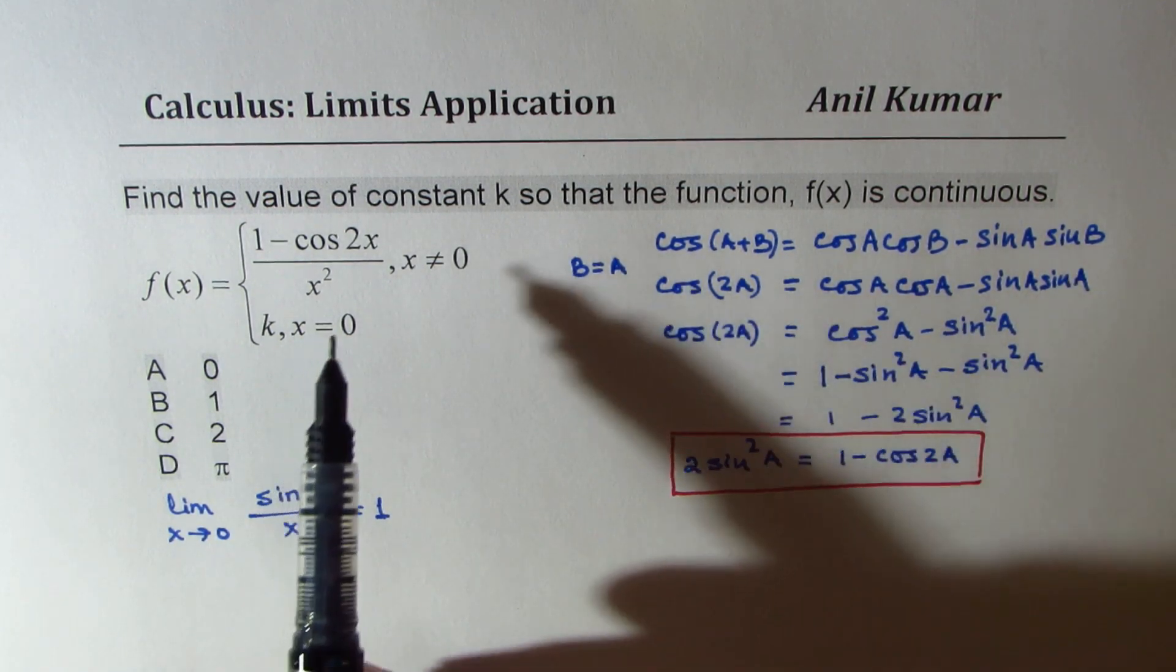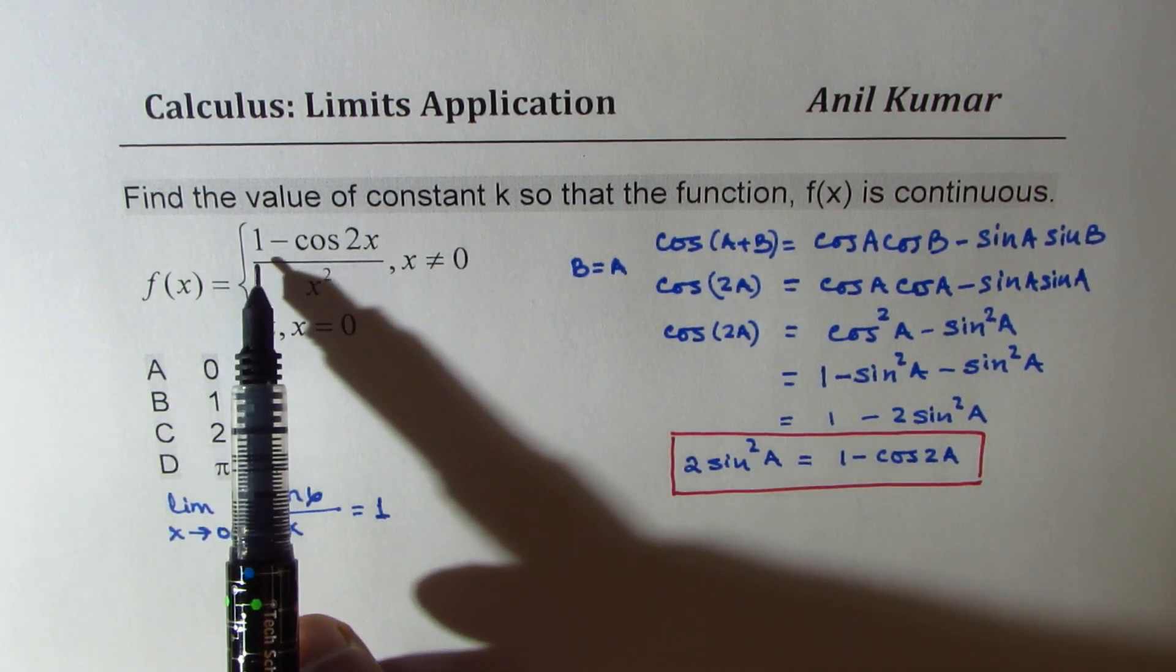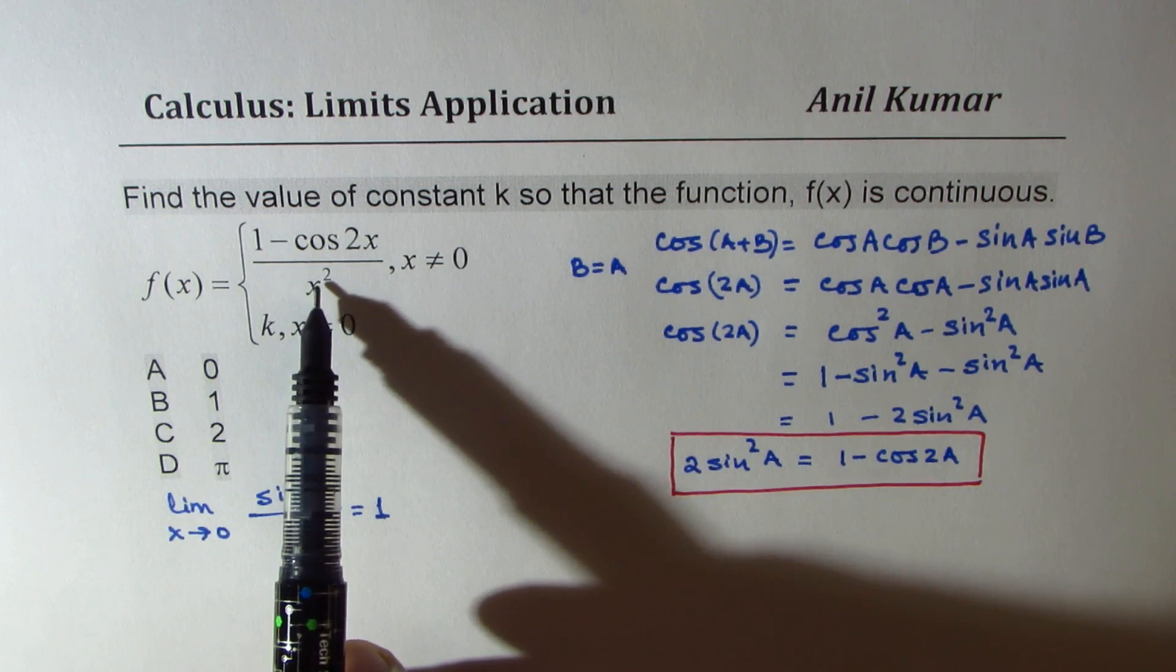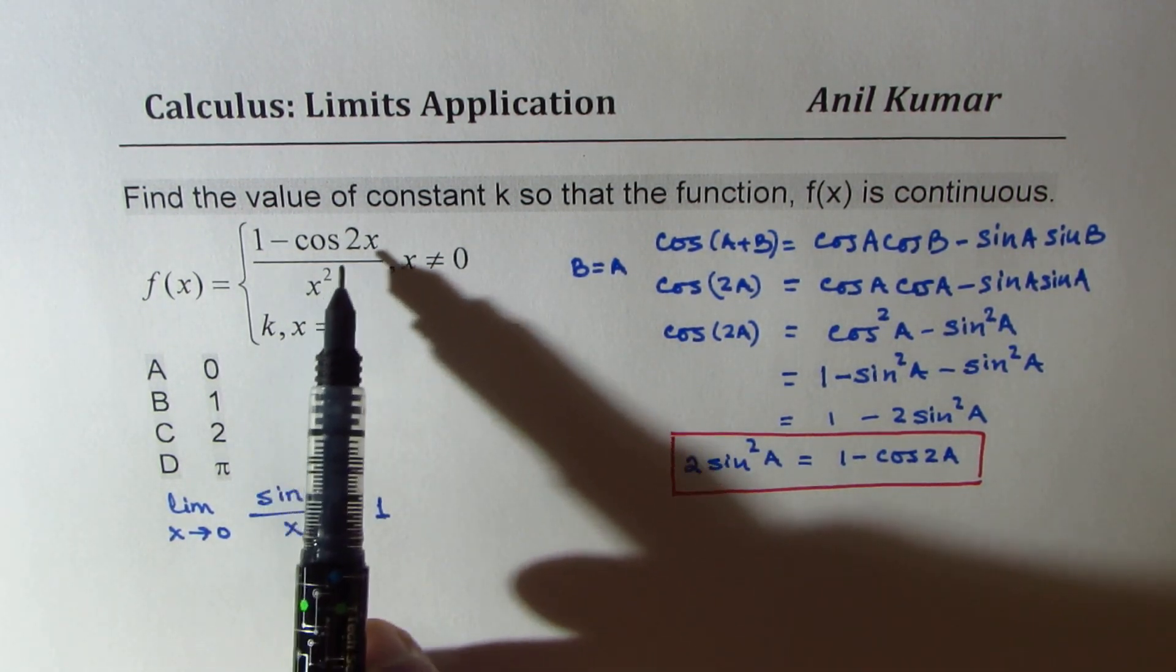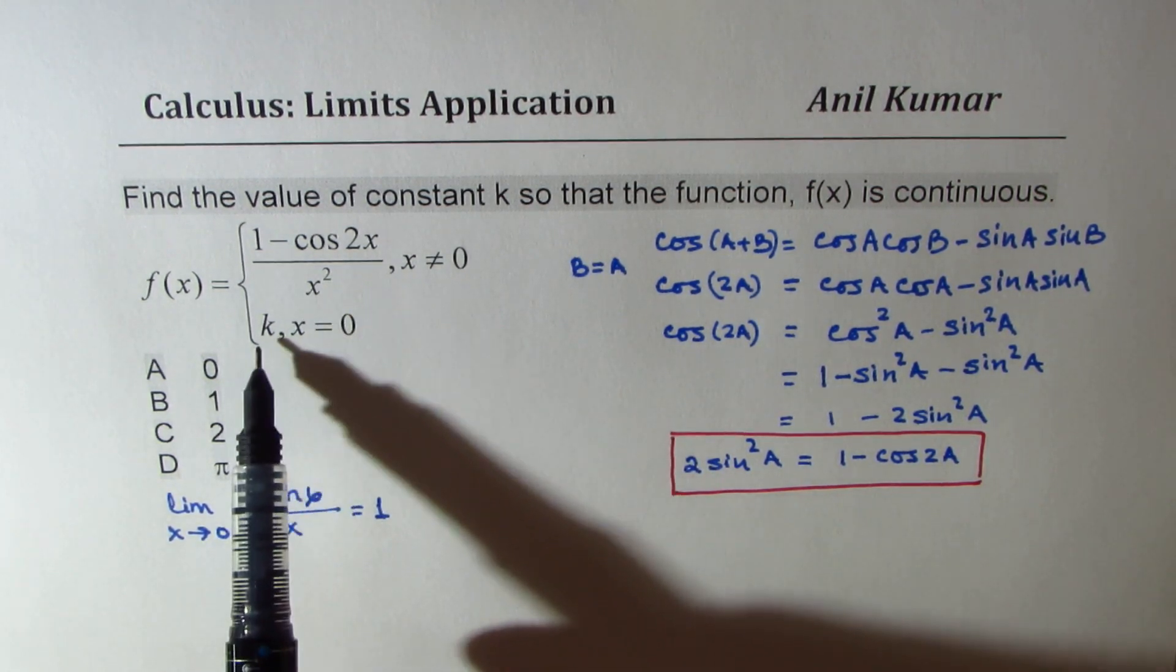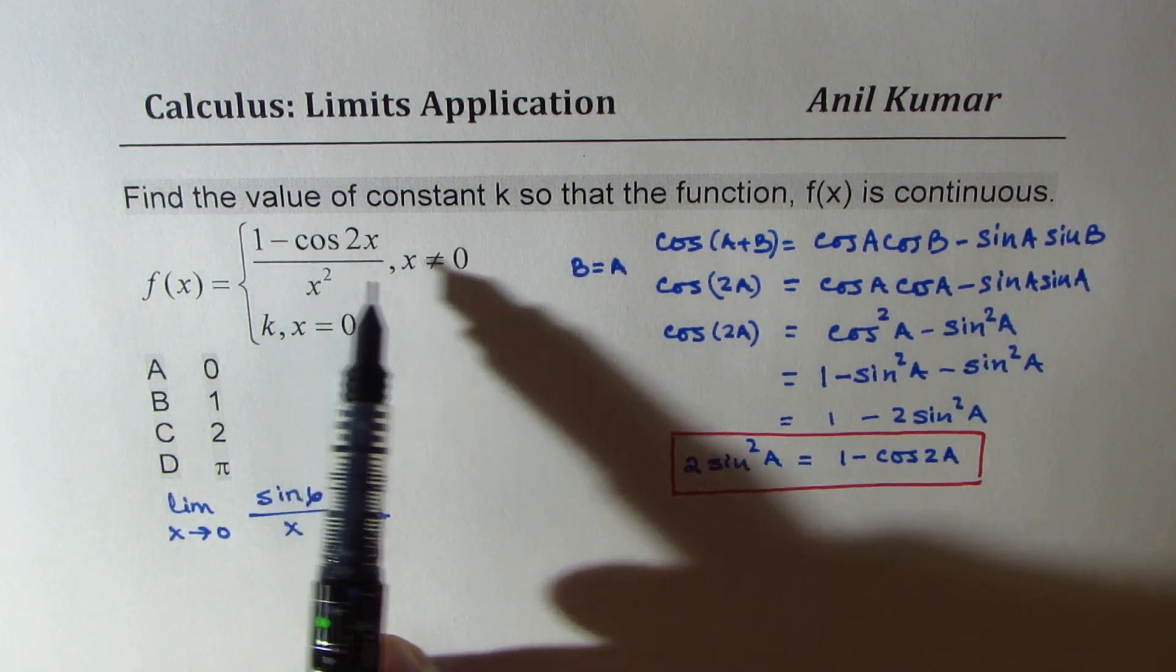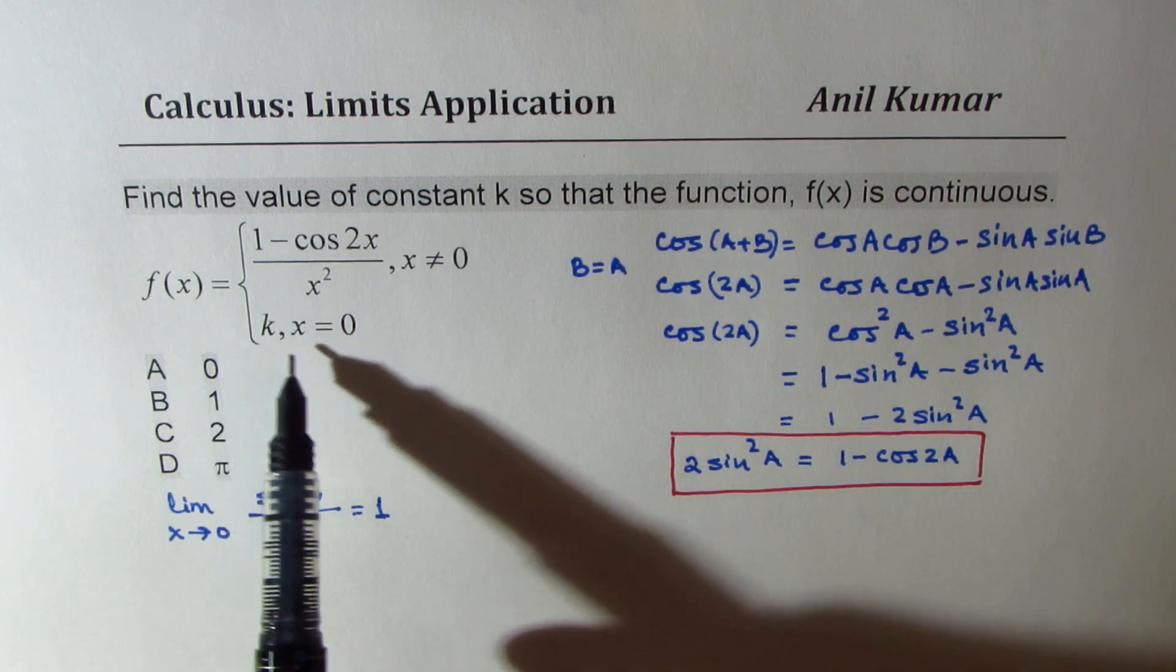Now, let's get back to the concept of continuity. Now, this particular function, 1 minus cos 2x over x squared, is discontinuous at x equals to 0, right? Now, if I somehow manage to get this k value same as the limit of this function as it approaches 0, then it can become continuous, right?